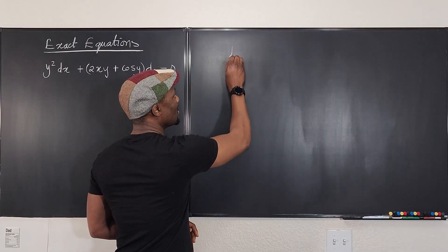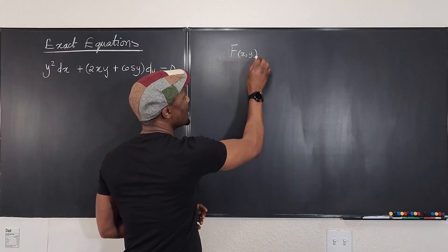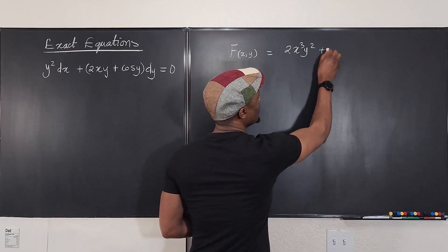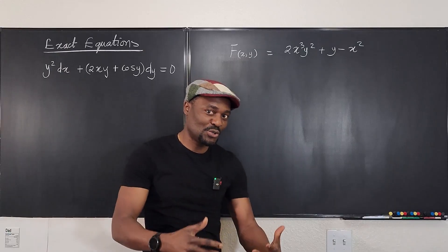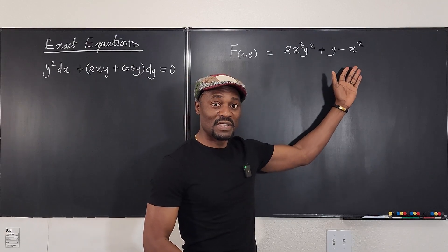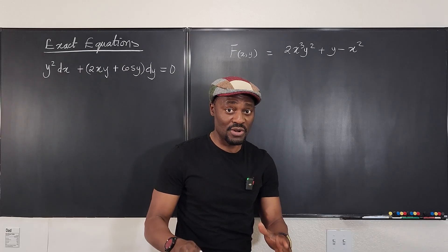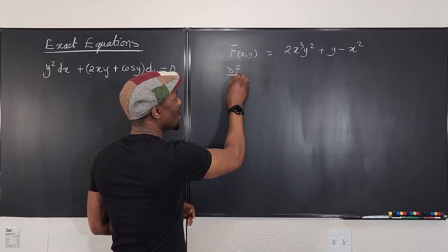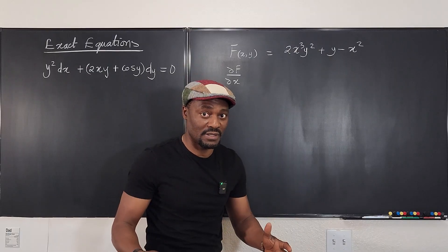Assuming we have a function which is a combination of x and y — a function of both x and y. Let's say you have 2x cubed y squared plus y minus x squared. Now what do you call a partial derivative? If I ask you to take the partial derivative of f with respect to x, it means if it is not a function of x, you treat it as a constant.